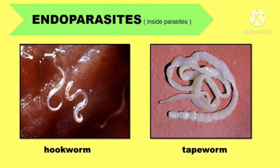The next type is endoparasites — yung mga parasites na nanirahan, nagpaparami, at nakaka-apekto sa loob ng katawan ng tao at hayop. We have hookworm — hookworms are found inside the stomach of humans, causing poor health and sickness to its host, and if not given proper attention it can even cause death. We also have tapeworm, which just the same lives inside the stomach — but tapeworms live inside the stomachs of animals. So hookworm ay makikita sa loob ng tiyan ng mga tao, samantalang tapeworm makikita naman sila sa tiyan ng mga hayop.